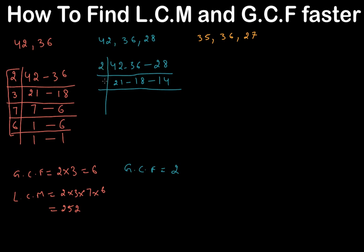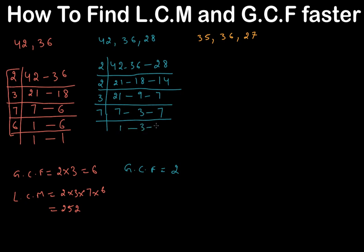To find LCM we keep going. Try 2 again: it doesn't go into 21, so leave 21 as it is; 2 times 9 is 18, 2 times 7 is 14. Now try 3: 3 times 7 is 21, 3 times 3 is 9, leave 7 as it is. Then try 7: 7 times 1 is 7, leave 3 as it is, 7 times 1 is 7. We reach all 1s at the bottom, so we stop.